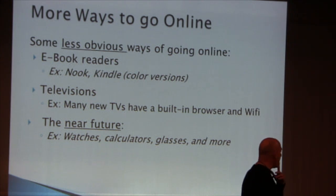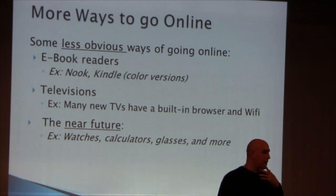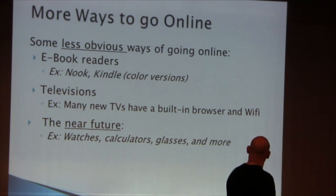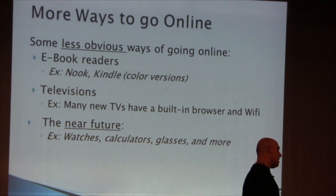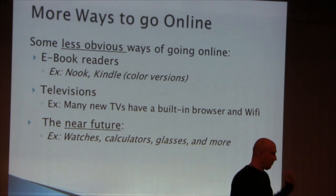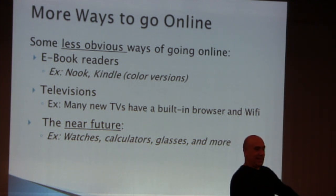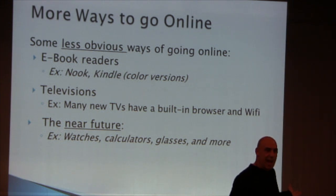A few less obvious ways of going online: e-book readers — if your Nook or Kindle is color, it has unrestricted access to the internet with a built-in browser. New televisions — if you've bought an LED flat-screen TV in the past year and a half or two years, there's a good chance it has a built-in web browser and built-in Wi-Fi, meaning you can surf the internet right from the TV with the remote control. I was really caught by surprise when I found that out — it was not a feature I was looking for. And in the near future, Google Glasses and smartwatches are now becoming available, meaning a news feed and browser right on your wrist.